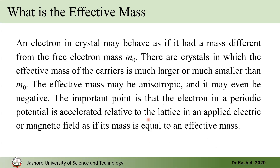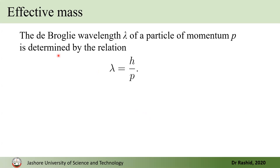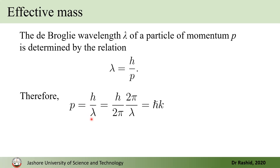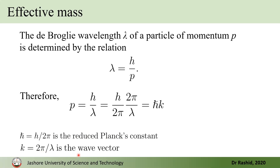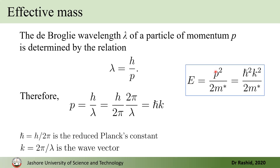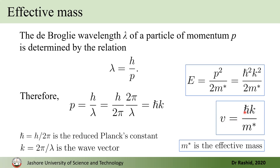To derive an expression for that, let's start with the de Broglie hypothesis. De Broglie says the wavelength of the electron is related to momentum by p = h/λ. With simplification, we have p = ℏk, where ℏ is the reduced Planck constant and k is the wave vector, equal to 2π/λ. We know that the kinetic energy E = p²/2m. Since p = ℏk, we can write E = ℏ²k²/2m. Also, momentum equals mass times velocity, so the velocity equals ℏk/m*, where m* is the effective mass of the electron.